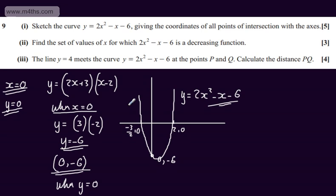This gives us a sketch of the curve. We've got the points of intersection by factoring the quadratic, setting y to 0, and then setting x to 0 for the y-intercept.